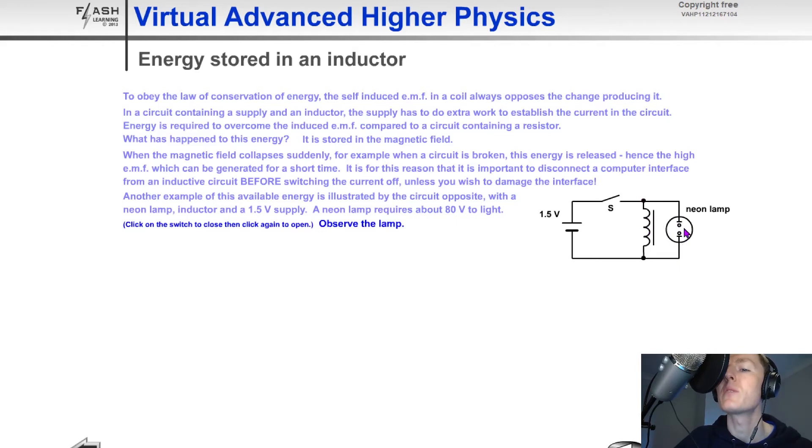So the idea here is that we want to try and power this neon lamp, but you'll see here it says that the neon lamp requires about 80 volts to light it. So when we close the switch, we're not going to have enough voltage across the neon lamp to light the lamp because when we close the switch, we only have 1.5 volts maximum across the inductor from the supply voltage. And that means we also only have 1.5 volt maximum across the neon lamp.